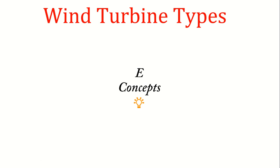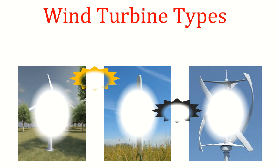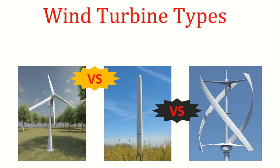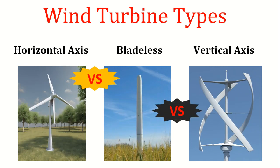Hi, friends. Welcome to eConcepts. Today, I'm going to discuss the core differences and working principles of three notable types of wind turbines: horizontal axis wind turbines, vertical axis wind turbines, and bladeless turbines.